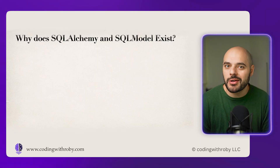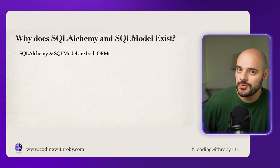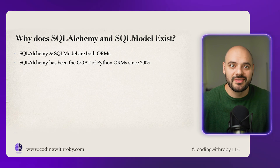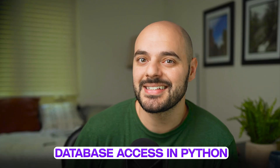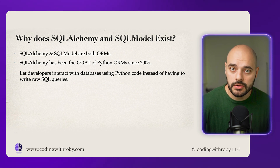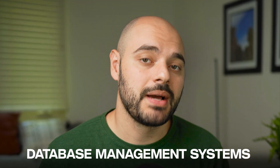This comparison is still relevant because the way you use these ORMs is fundamentally different. SQLAlchemy is a comprehensive object-relational mapping tool for Python. It's been the GOAT of Python ORMs since 2005 and is the most widely used library for database access in Python. SQLAlchemy lets developers interact with databases using Python code instead of writing raw SQL queries, allowing Python developers to focus on Python rather than SQL. Its flexibility is what's made it the top choice for database management in Python for years.